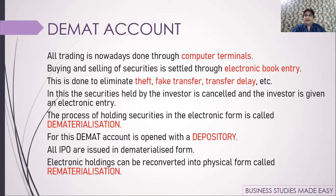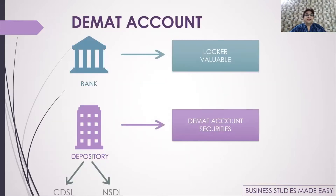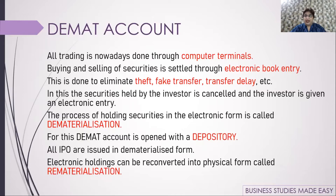The process of holding securities in electronic form is called dematerialization, and opening a DMAT account is called dematerialization. The DMAT account is held with the depository. All IPOs (Initial Public Offers) are now in dematerialized form. If for some reason you want to convert electronic holdings back to physical form, that is called rematerialization — the opposite of dematerialization.